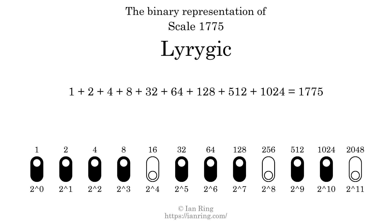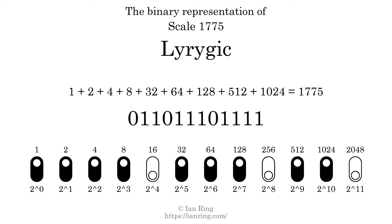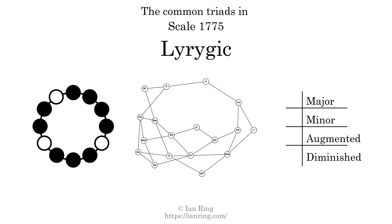The scale number not only enumerates the scale with a unique index, but it also literally describes the tonal content of the scale. Represented as a binary number in base 2, the scale number is 0, 1, 1, 0, 1, 1, 1, 0, 1, 1, 1, 1. Here are the common triads present in this scale.